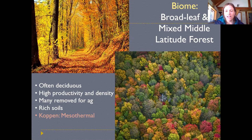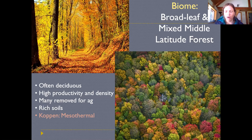Fortunately these areas tend to have slightly younger and more nutrient-rich soils than the tropics, so areas previously cleared for agriculture have been able to experience pretty successful reforestation. Some still support agricultural systems today, but where we've decided agriculture isn't needed, reforestation has been quite successful — unlike in tropical forest systems where we're less confident of success. In the Koppen climate zones, these forests are associated with mesothermal or middle-temperature zones, particularly subtropical humid zones.